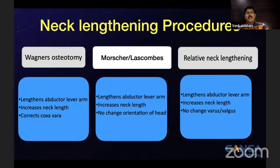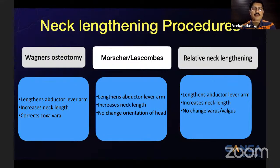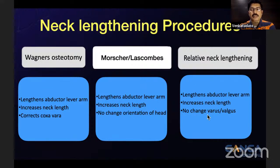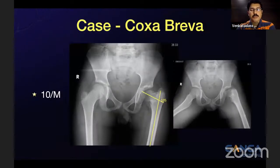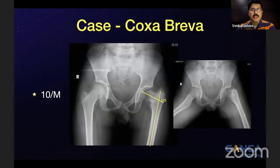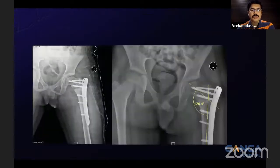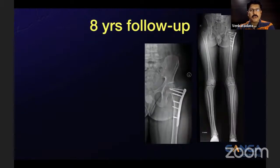The relative neck lengthening procedure, described by Professor Ganz, is what we commonly do now. All three types — Wagner, Mosher, and Lascombe — achieve lengthening of the abductor lever arm and increase neck length. Wagner additionally corrects coxa vara and changes head-neck orientation, whereas Mosher and Lascombe do not change head orientation. In relative neck lengthening, there is no change in varus or valgus. Case example: a 10-year-old boy with post-septic sequelae of the hip, neck shaft angle of 105 degrees, 5 cm shortening — an attempted Mosher's osteotomy using a reversed distal femur locking plate. At 8-year follow-up, 1.5 cm shortening remains but the hip is reasonably functional.